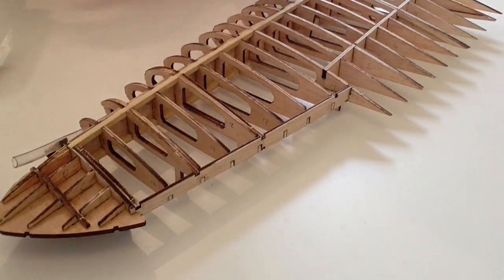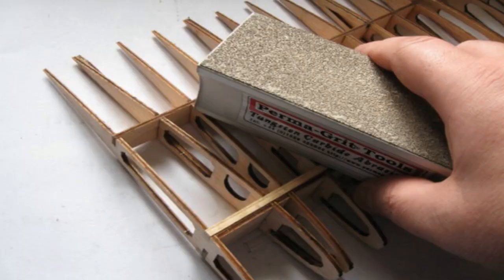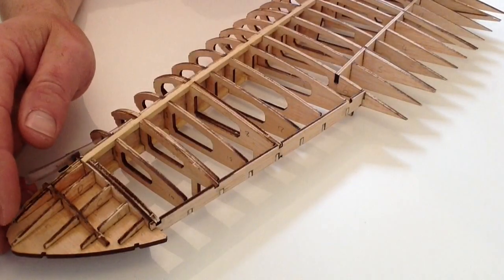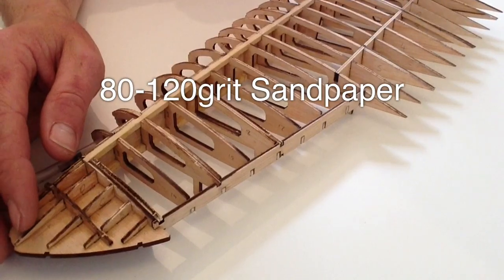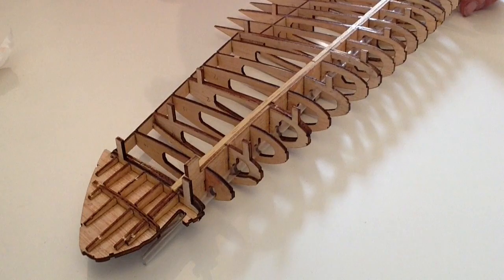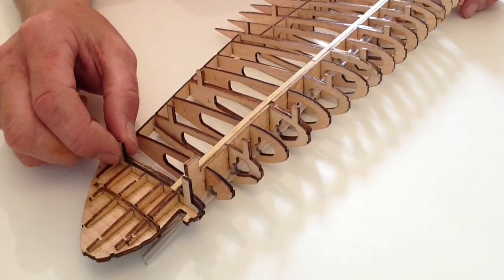Get some decent grip sandpaper on there, probably about 80 to 120 grit, and first of all start to remove these tabs. You've got two options: you can use some side clippers just to clip them off gently or use a razor saw.